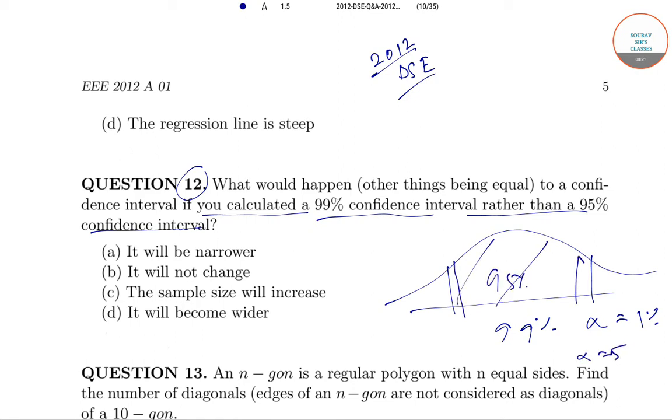The alpha is 5%, so obviously the confidence interval will be wider in this case. Therefore, option number D is the correct answer.